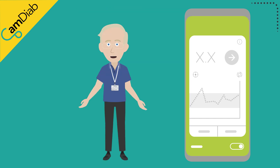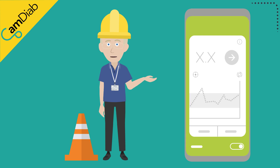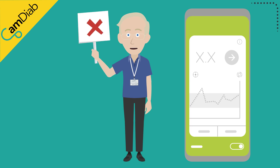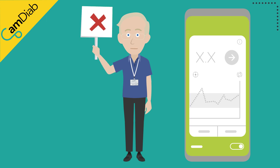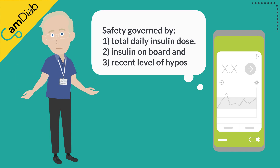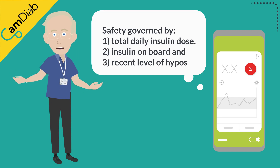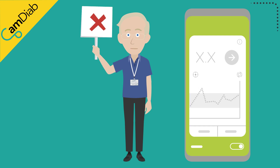Finally, there is one more important component which has a final say on APSFX's insulin delivery: a safety layer. The safety layer uses a number of rules to reduce the risk of very high or very low glucose levels. These rules govern the maximum amount of insulin that can be delivered, based on the individual's total daily insulin dose, how much insulin has recently been delivered (insulin on board), and the recent level of hypoglycemia. In order to reduce the risk of infusion-set occlusion, insulin deficiency and ketosis, the APSFX is also designed to deliver a minimum insulin amount over a certain period of time.